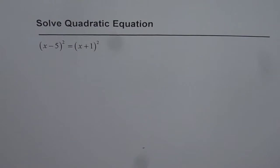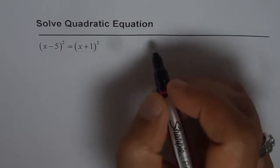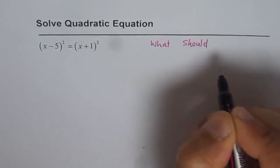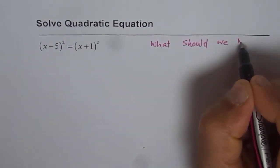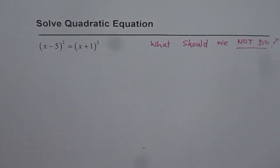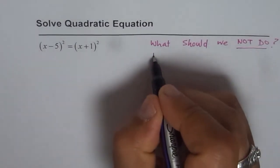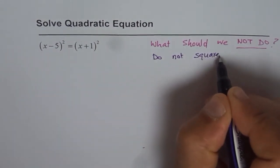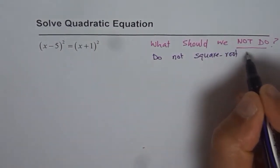Before telling you what we should do, it's important to understand what we should not do. What we should not do is do not square root both sides.